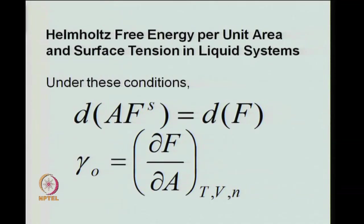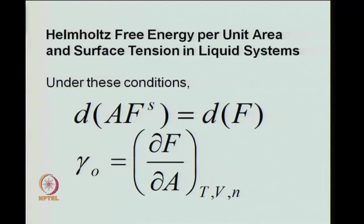Now if Helmholtz free energy per unit area is F_s, we may want to know the relation between F_s and surface tension in a liquid system. We will later put certain restrictions on solids, because certain precision is lost in the meaning of surface tension for solids and there are other preferable terms. Under the presumed conditions, d(A·F_s) is equal to dF, where F_s is the Helmholtz free energy per unit area and A is the total area, and we just worked out γ₀ equal to ∂F/∂A at constant T, V, and N.